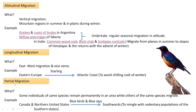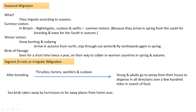Partial migration is also there. In partial migration, not all individuals of a species participate — only a part of the population migrates. An example is bluebirds and blue jays of Canada and the northern United States. They migrate to the southwest to mingle with the sedentary populations of the southern states.